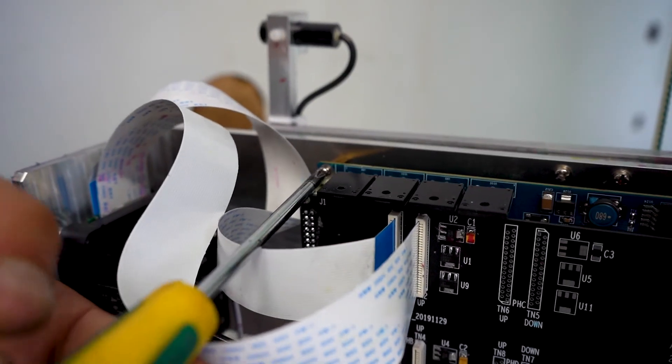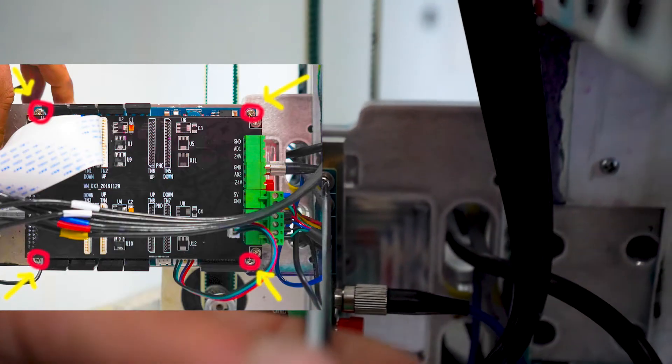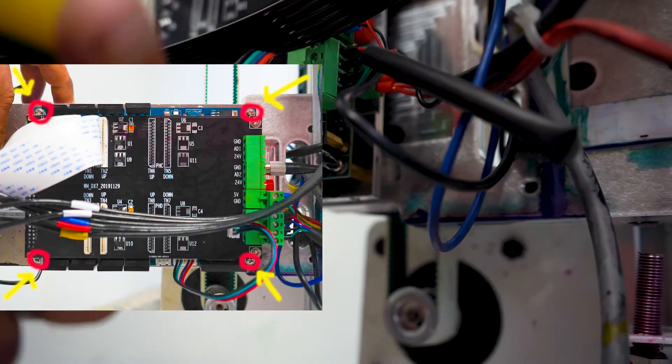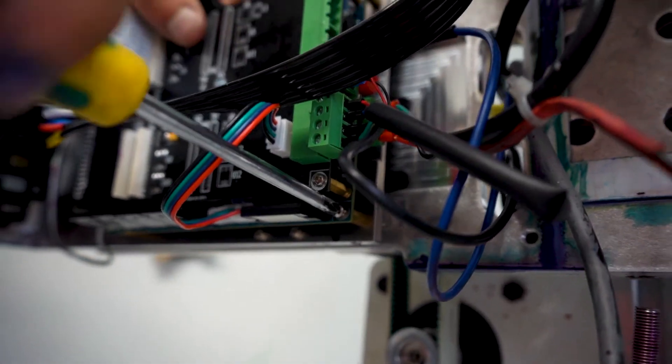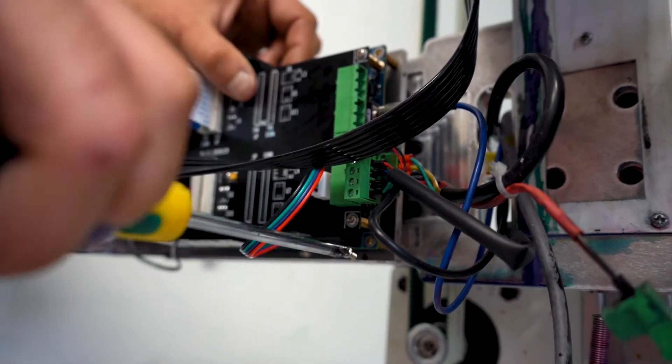There are four screws to remove the board. The location of these four screws are shown. Be sure to hold and stabilize the board as you remove the last two screws.